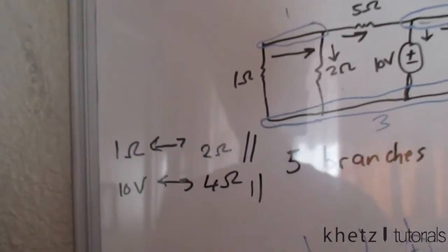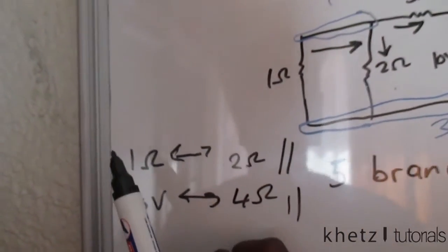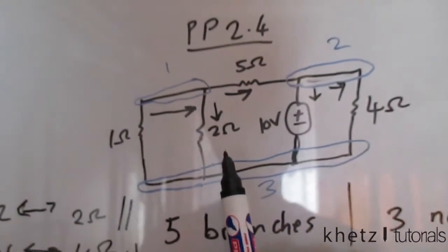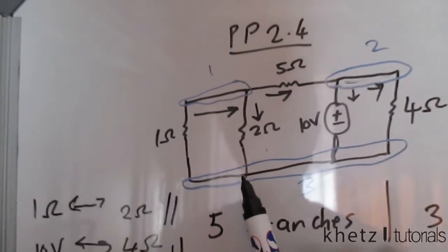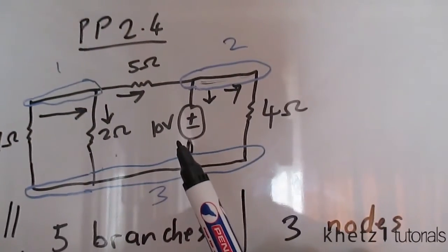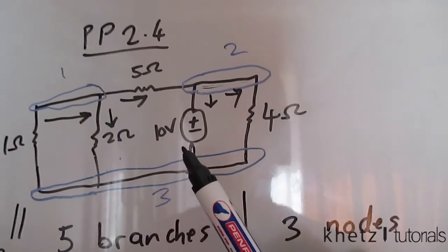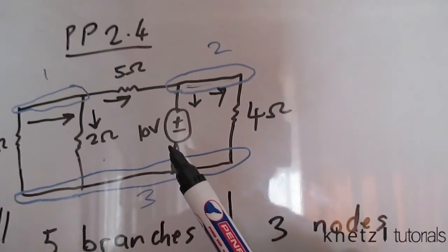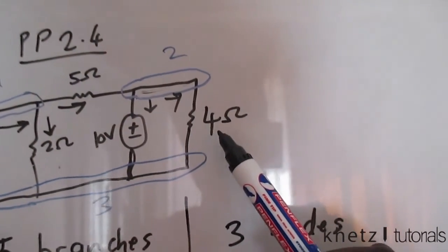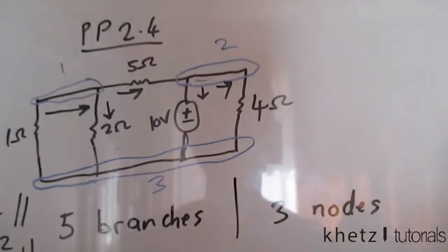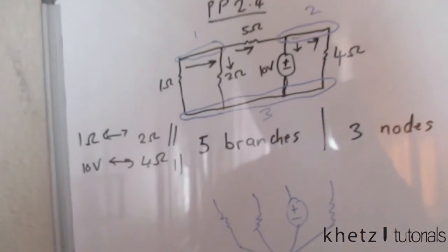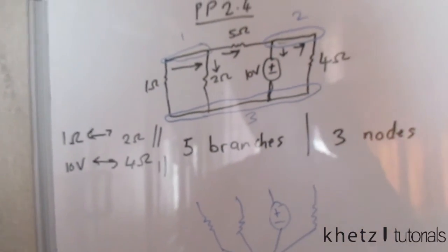So the only conclusion you can make is: the 1 ohm and the 2 ohm are in parallel, and the 10 volt voltage source and the 4 ohm resistor are also in parallel. And that is how you solve this question.